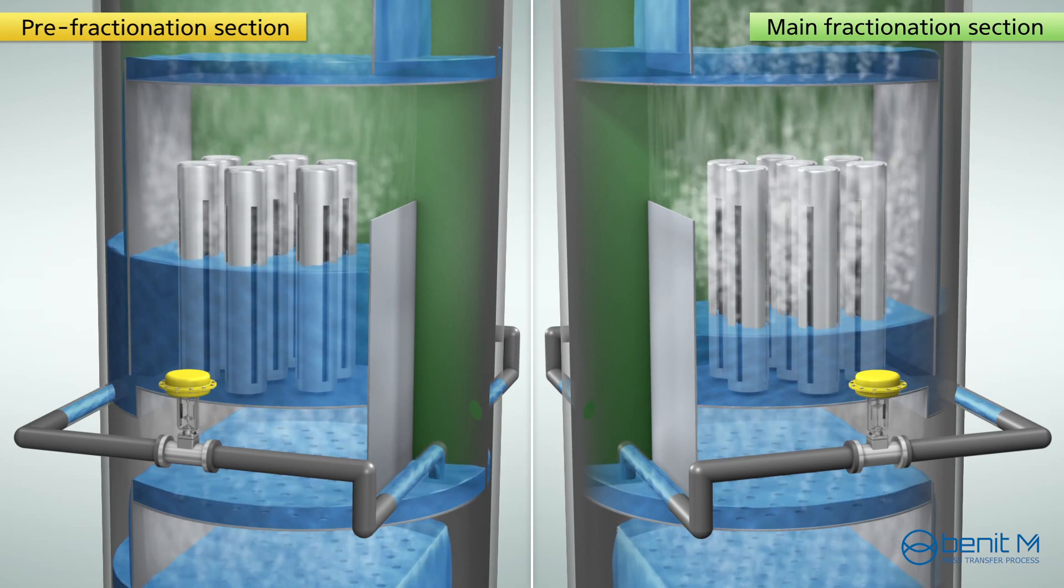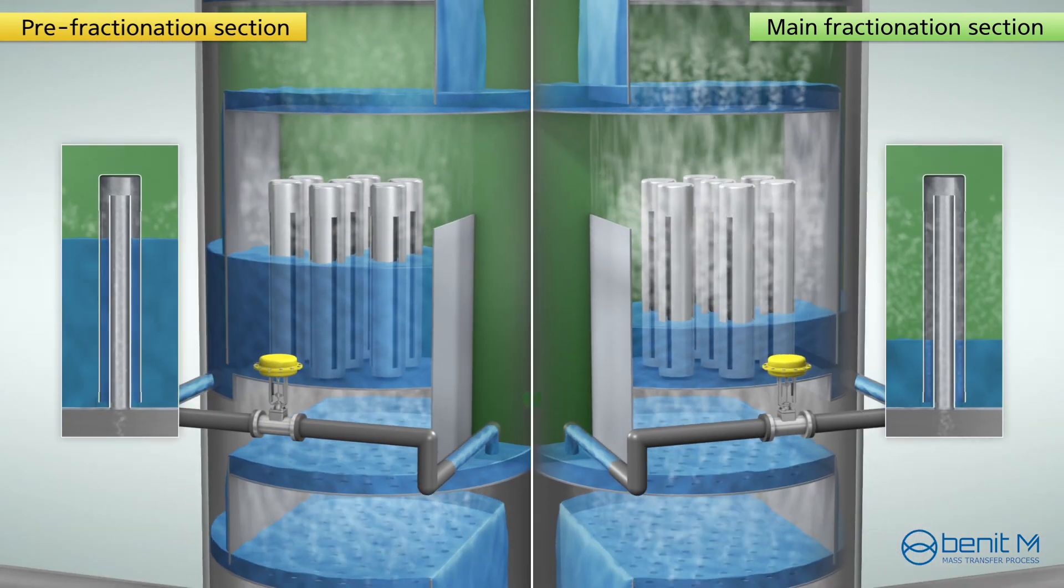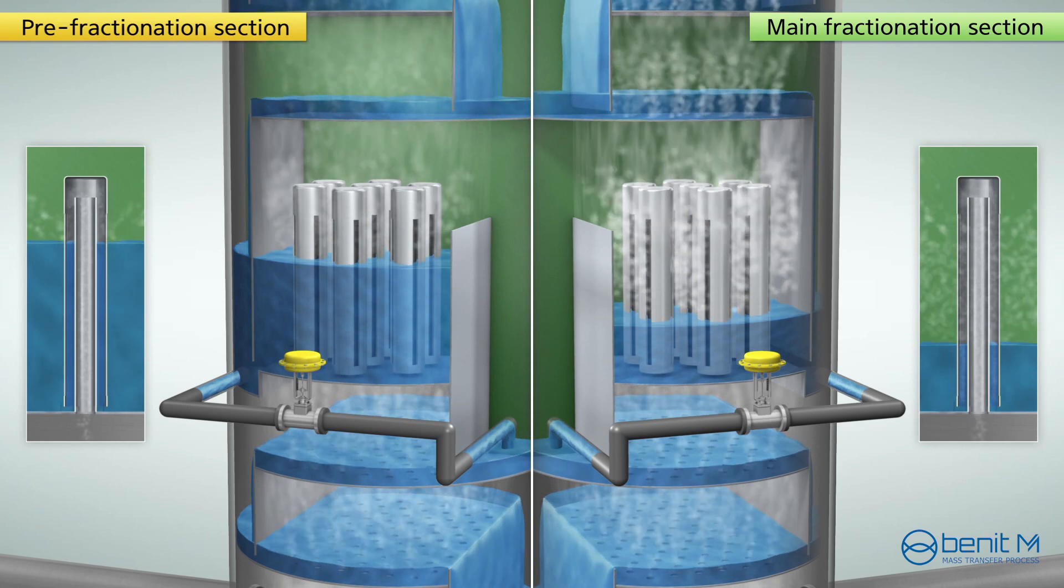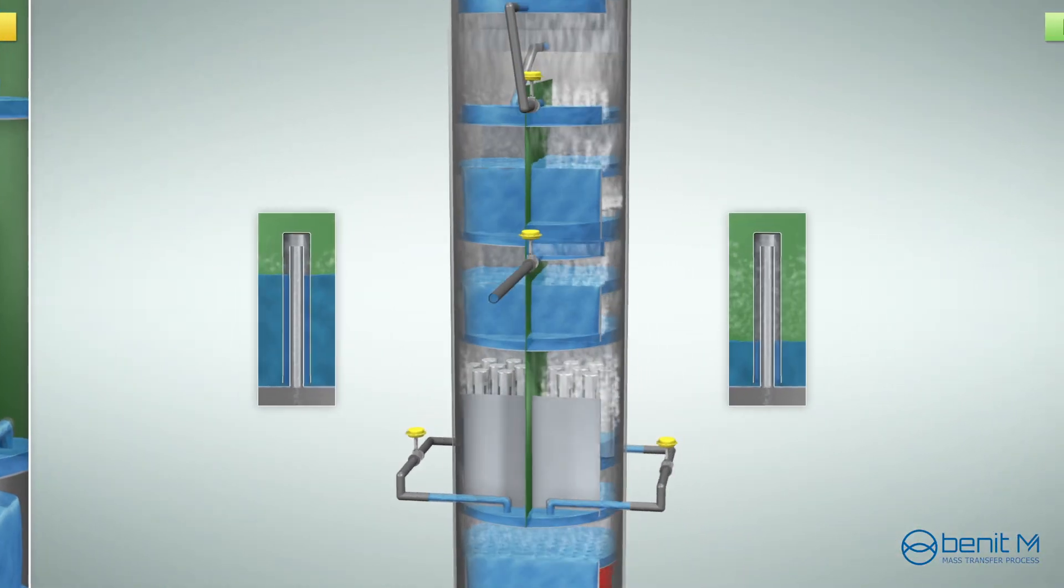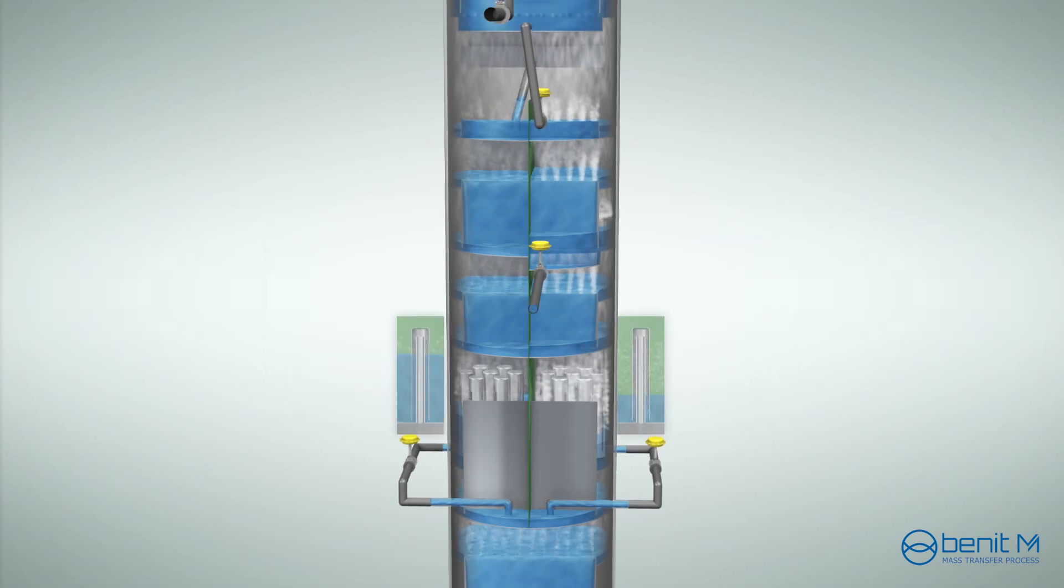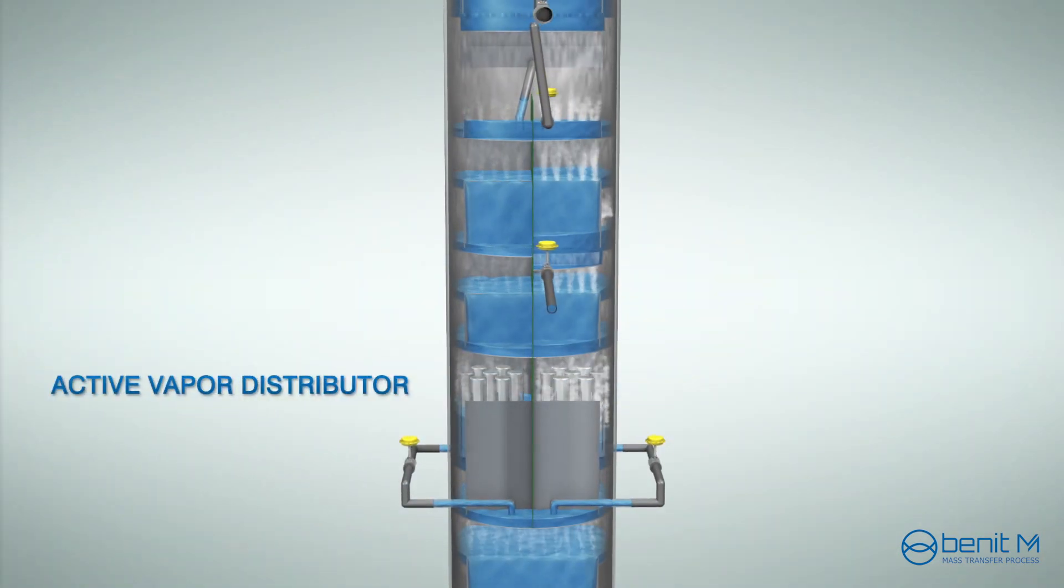With this manner, the vapor split ratio control can be accomplished intentionally just by adjusting the liquid level on the chimney tray. That's why we call this chimney tray the active vapor distributor.